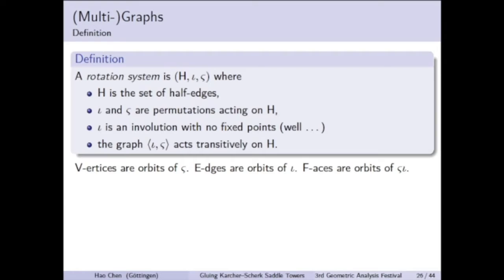The vertices are the orbits of sigma. The edges are orbits of the involution iota. In fact, the rotation system also determines a two-cell embedding of the graph whose faces correspond to the orbits of sigma times iota.